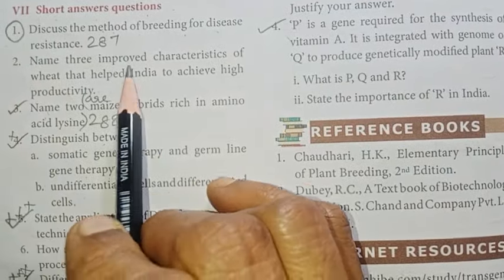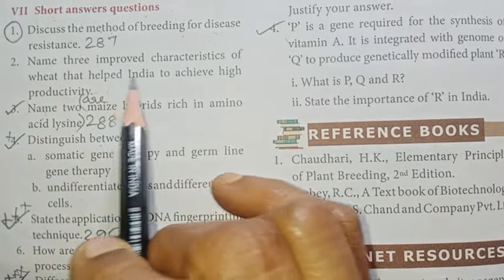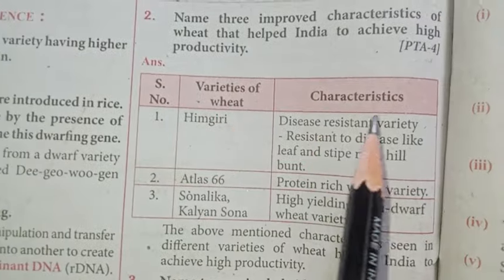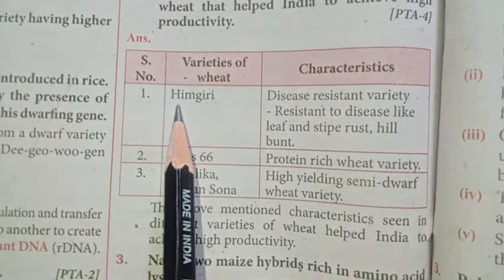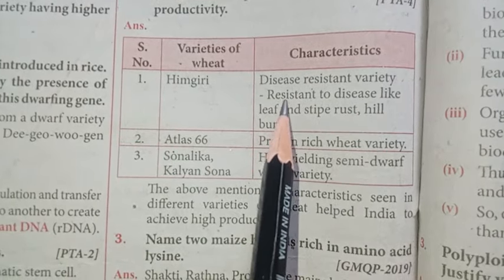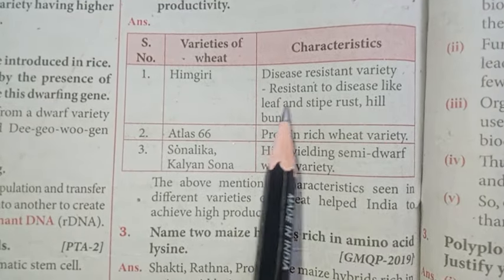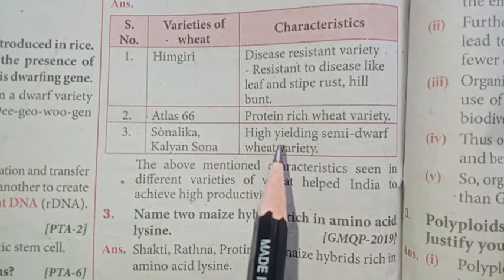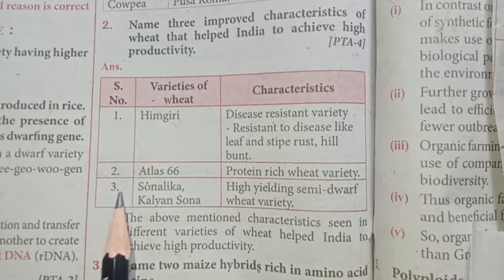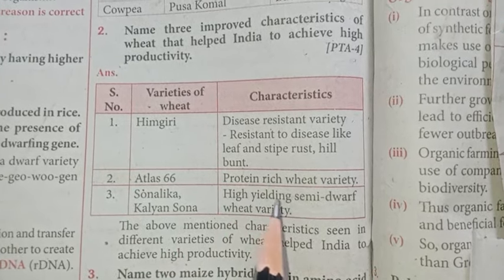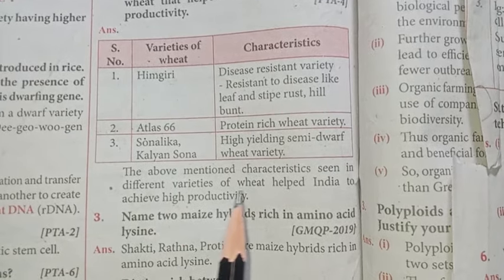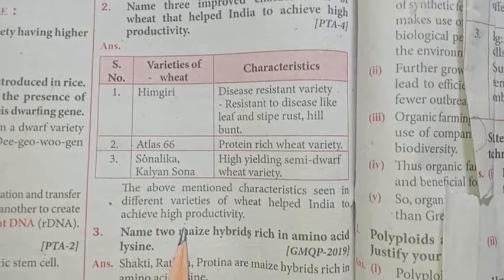Number two: Name three improved characteristics of wheat that helped India achieve high productivity. Answer from the tabular column: First — Himgri, a disease-resistant variety resistant to leaf and stripe rust and hill bunt. Second — Atlas 66, a protein-rich wheat variety. Third — Sonalika and Kalyan Sona, high-yielding semi-dwarf wheat varieties. These characteristics seen in different varieties of wheat helped India achieve high productivity.